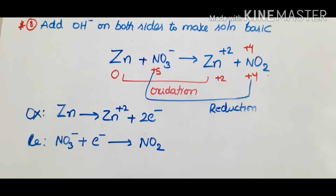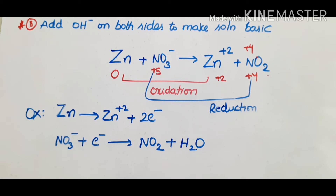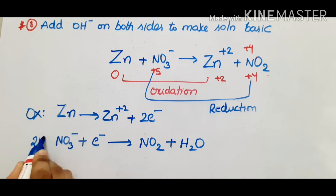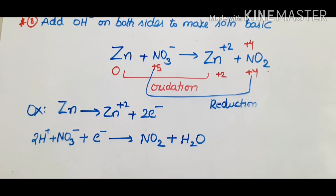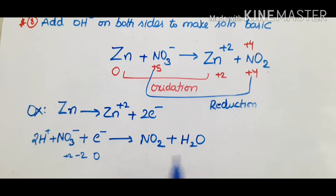The reduction half reaction gives NO3⁻ → NO2. Add H2O to balance oxygen. Add H+ to balance hydrogen — we add 2H+. This is the third step: add H2O to balance O, add H+ to balance hydrogen. Check the charge balance: the charges are equal, meaning the half reaction is balanced.